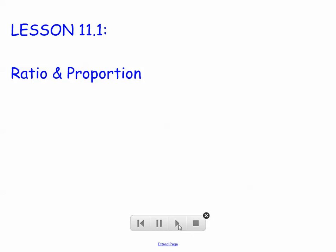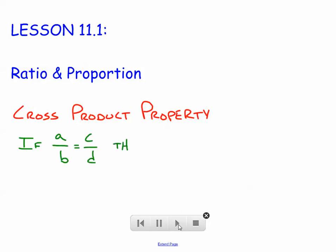The most important property that we're going to use in this section is called the cross-product property. I'm assuming a lot of you have used it before. We use it to solve all of our equations today. It states that if A is to B as C is to D, then A times D equals B times C.